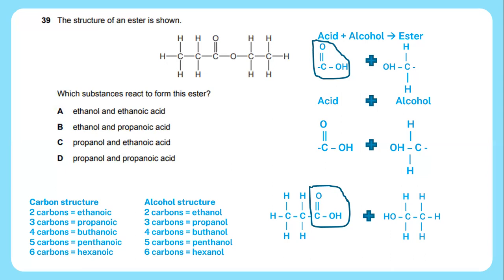Three carbons will be propanoic, four carbons will be butanoic, five carbons will be pentanoic, and six carbons will be hexanoic. Meanwhile on the other hand, alcohol structure: when there is two carbons, it is ethanol. Three carbons will be propanol, four carbons will be butanol, five carbons will be pentanol, and six carbons will be hexanol.